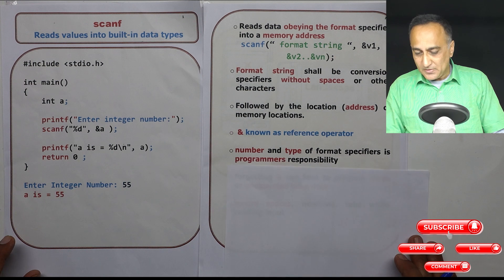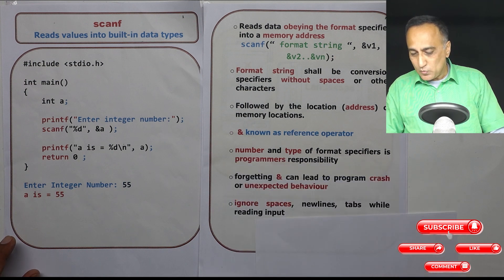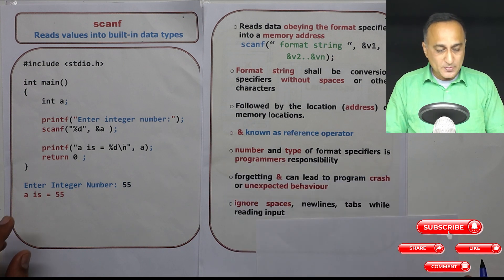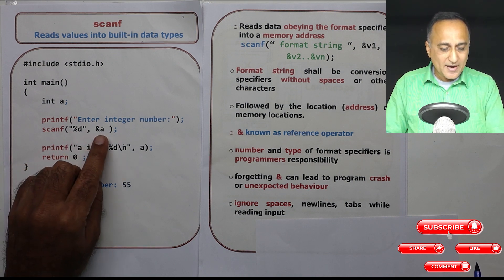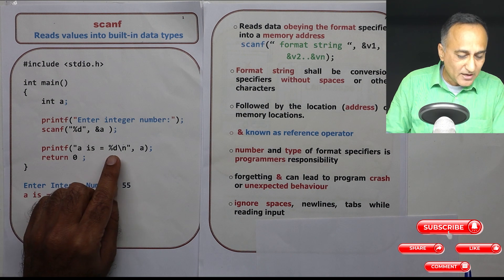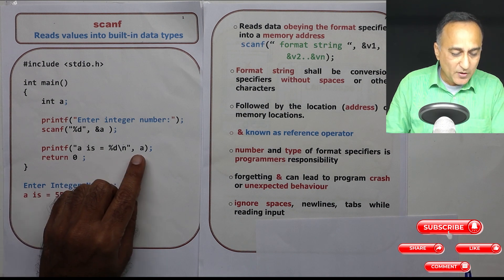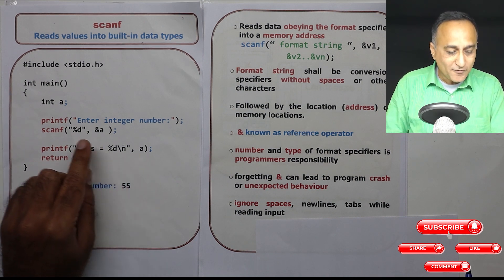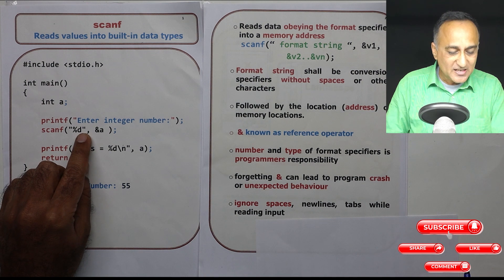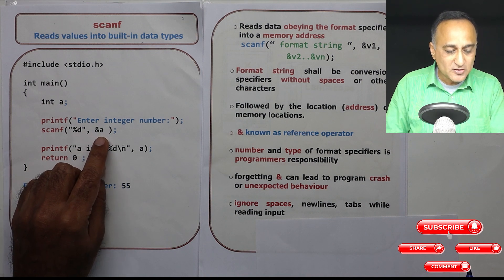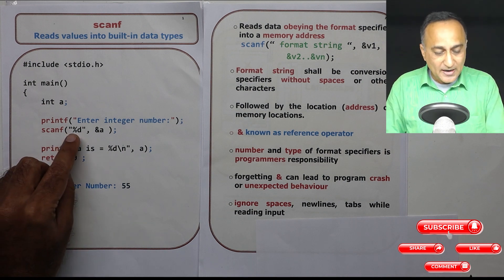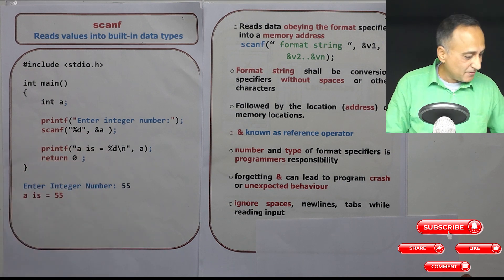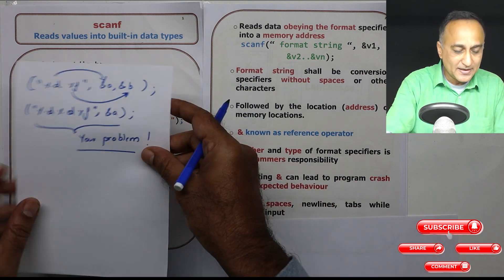Now, you have to understand what you mean by this format specifiers. So one %d I have, so I have one a. Similarly when I'm printing I have one %d, I have one a. So if I had two %d then I would have had probably address of a comma address of b. So the number and type of this should match this.